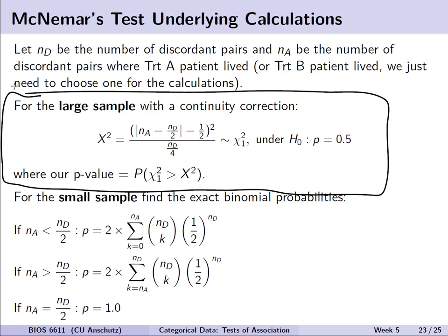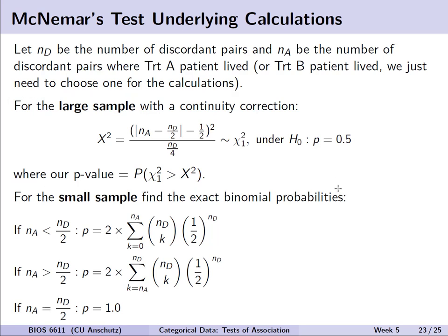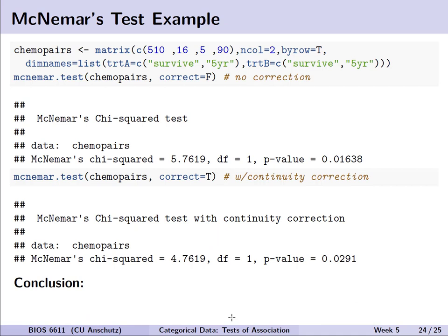We calculate the p-value asymptotically by comparing the test statistic X-squared to the chi-squared distribution with one degree of freedom. With smaller samples — fewer than 20 discordant pairs — we calculate the exact binomial probability based on one of three scenarios: summing from 0 up to Na, from Na up to Nd, or if we have exactly half, the p-value equals 1.0 and no calculation is needed. R provides this functionality for us to use.